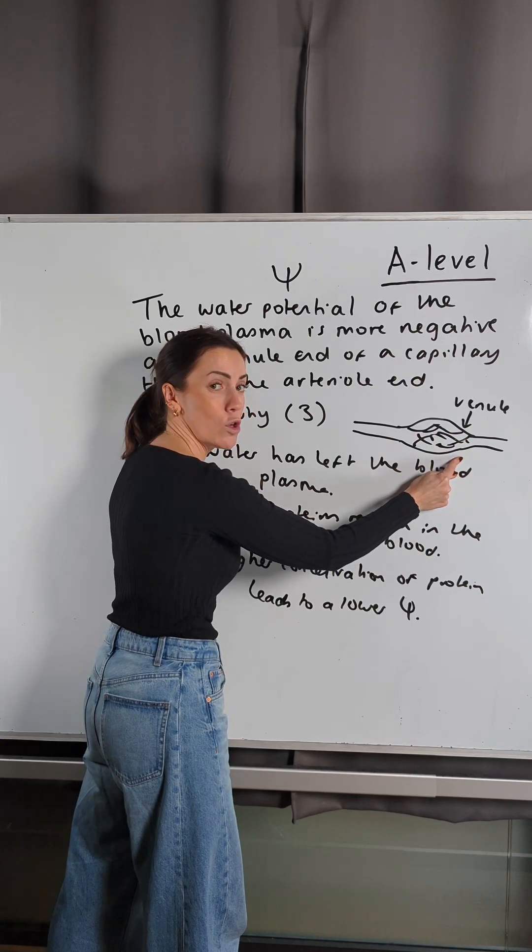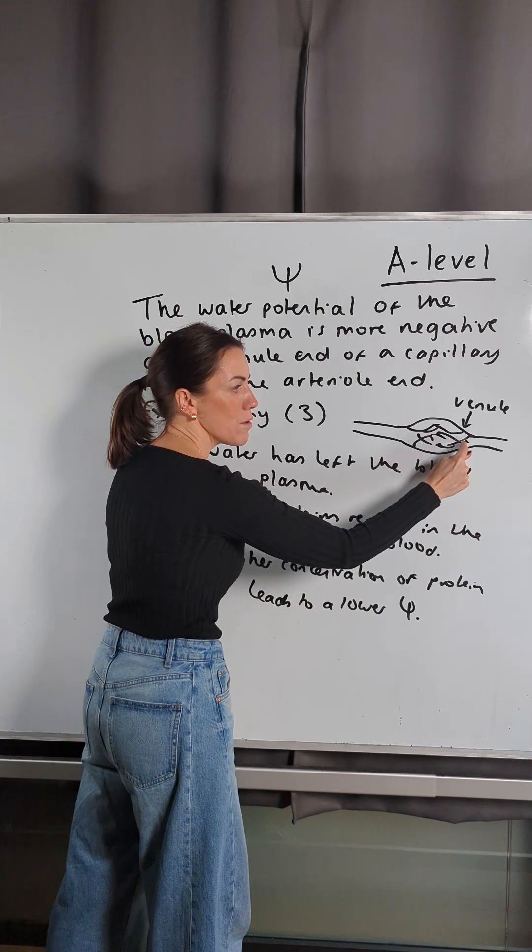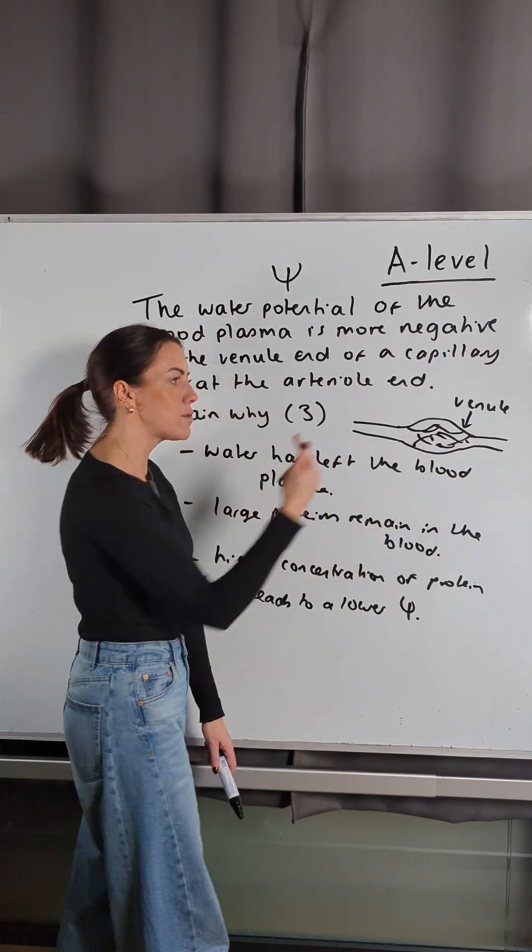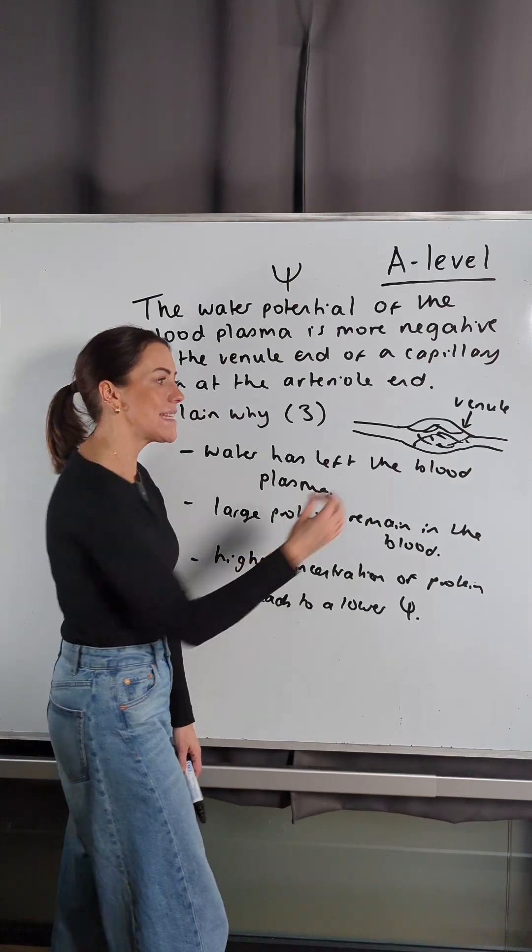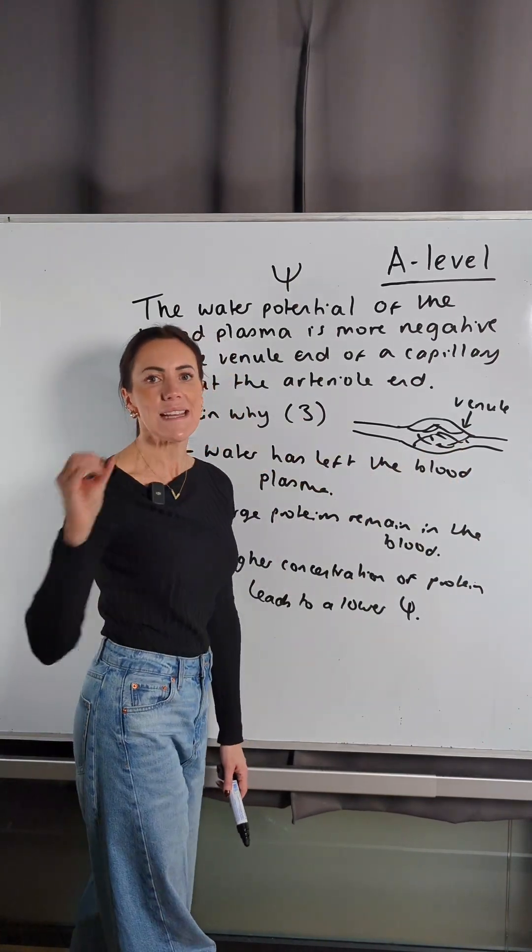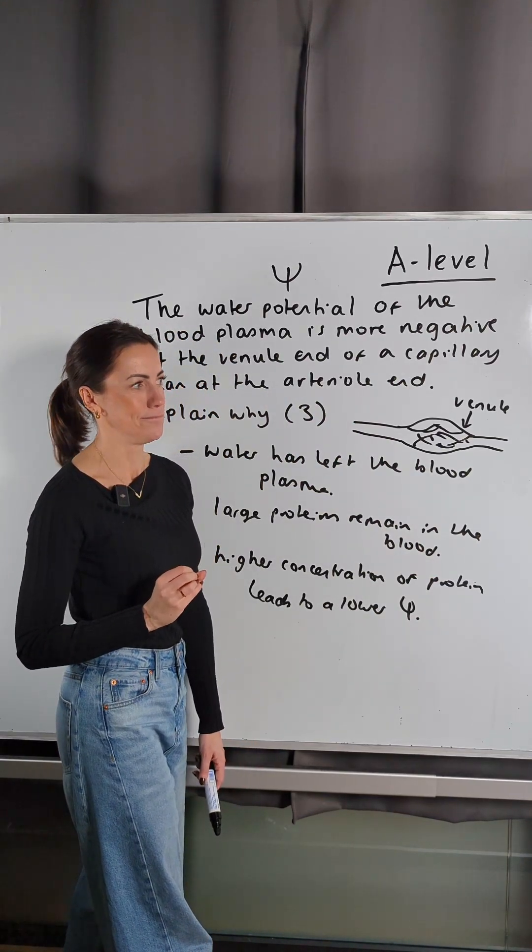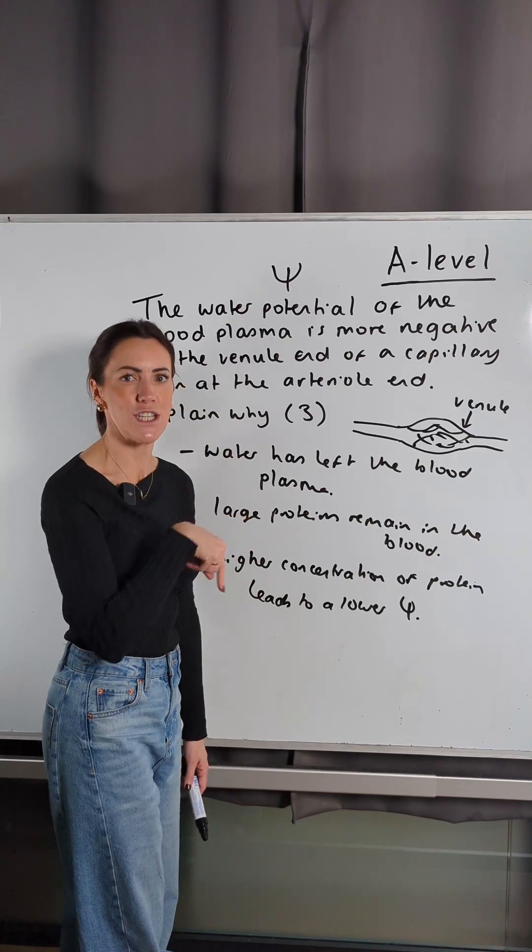And that's why at the venule end, water will move back in by osmosis because you've now got a low water potential in the capillaries at the venule end. There's a higher water potential in the tissue fluid that surrounds the network, so water will move back in by osmosis down the water potential gradient. Remember, any tissue fluid that is not reabsorbed in that way can drain into your lymphatic system.